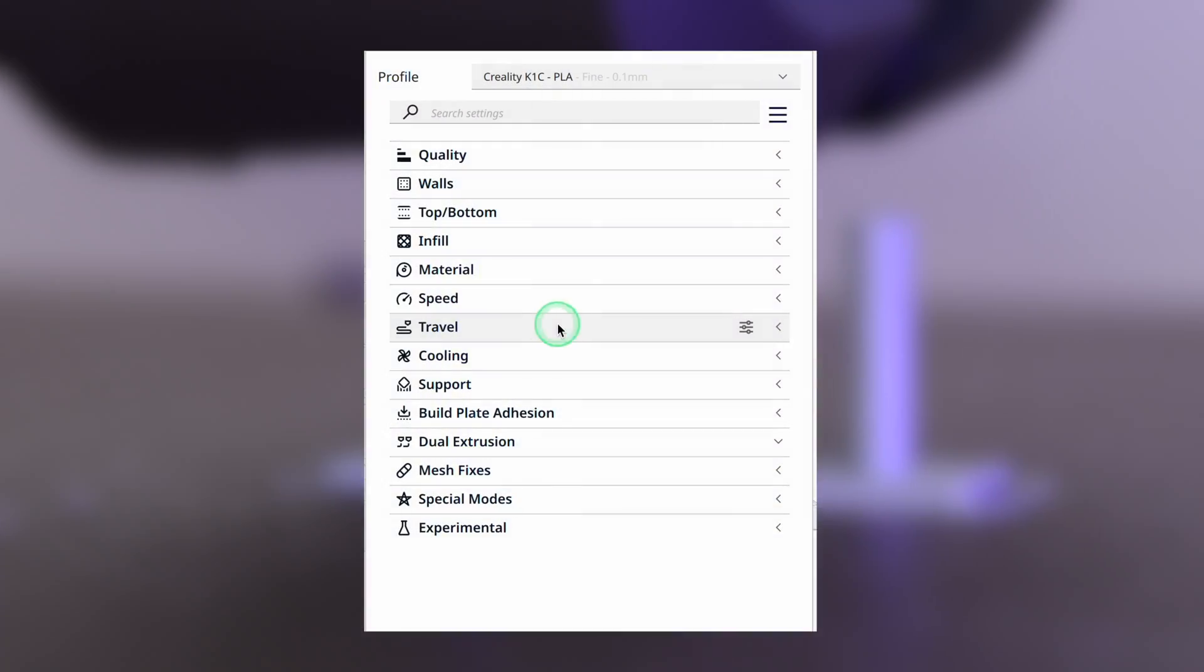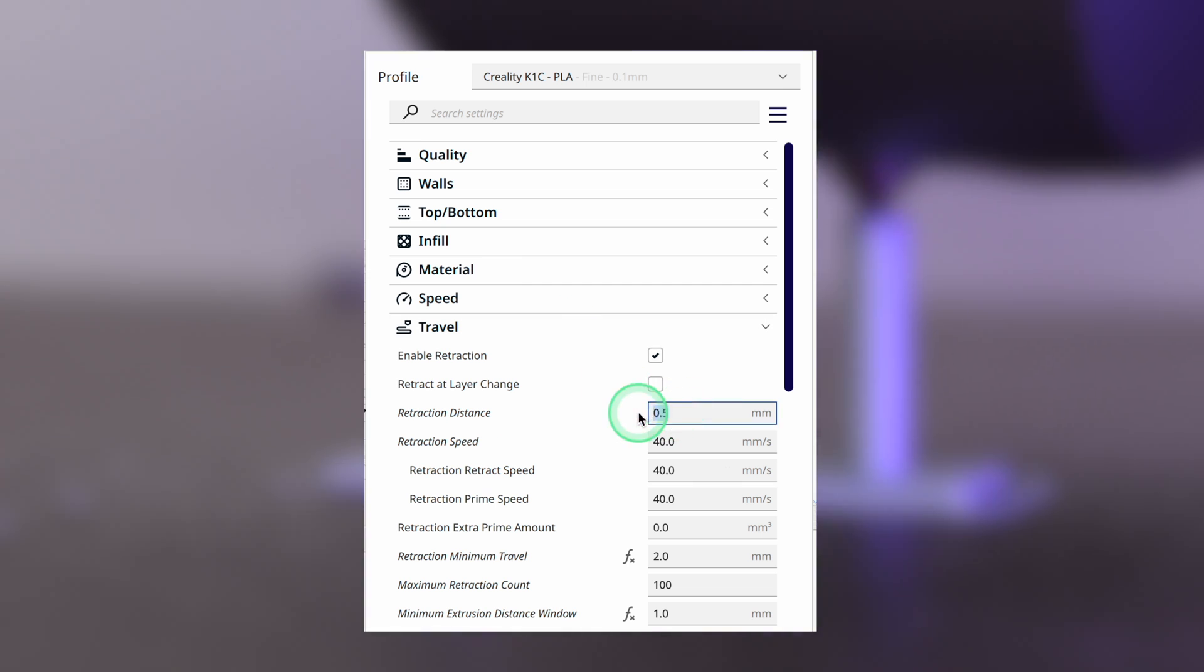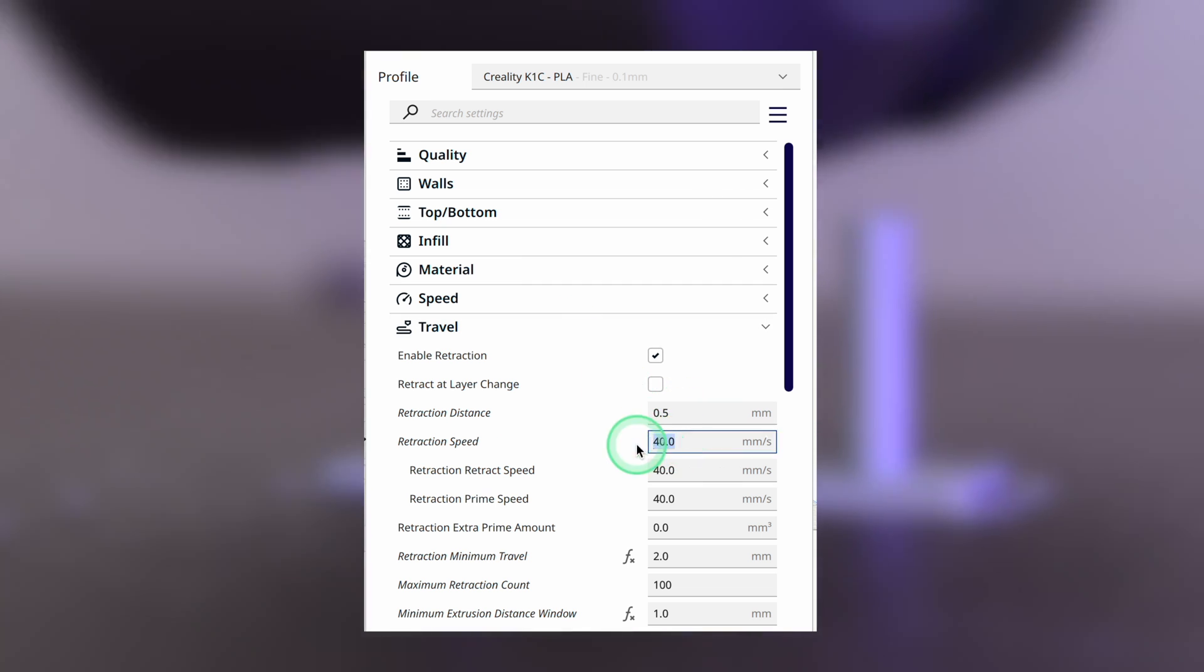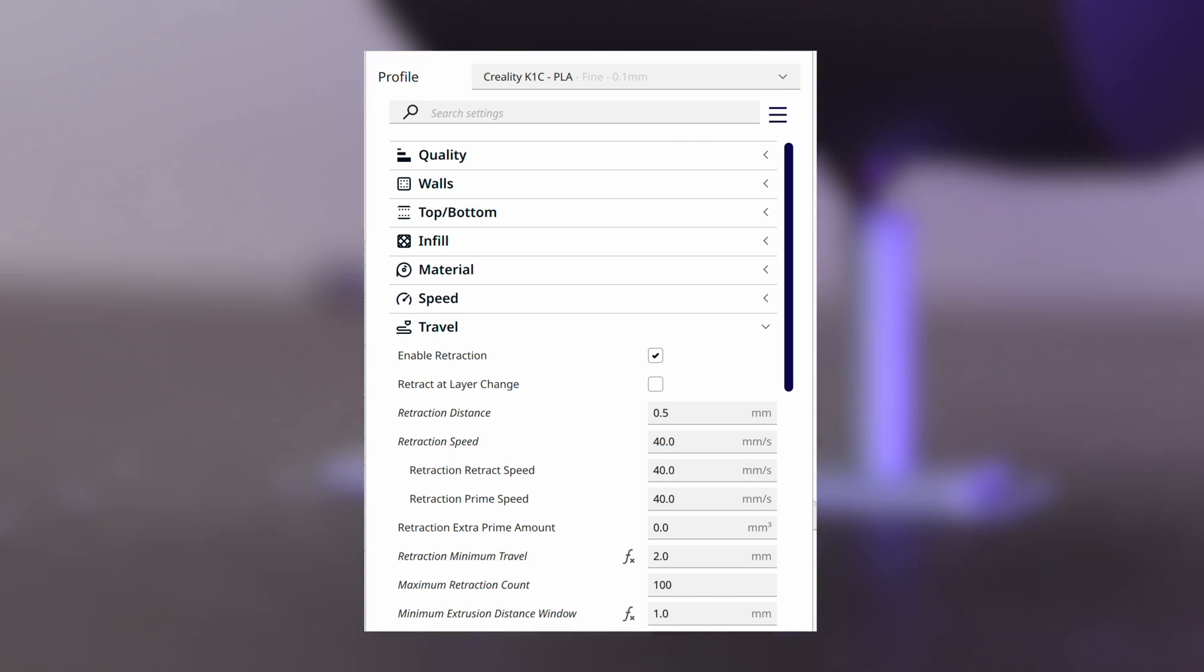The most important settings that you need to adjust in the slicer are the retraction distance and the retraction speed. The values are different for every 3D printer and filament and need to be calibrated for perfect results.